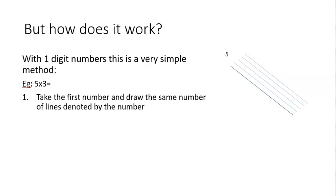Let's first start with one-digit numbers as it's a very simple method. Let's look at the example 5×3. Step one is to take the first number and draw the same number of diagonal lines denoted by the number. So you see here I drew five diagonal lines from left to right.